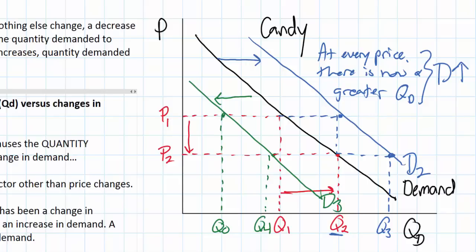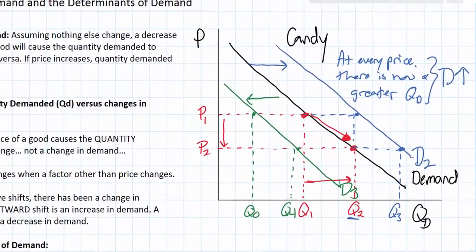That is distinct from a change in quantity demanded, which occurs when the price itself changes. Looking back at our original demand curve — the black curve — we saw that a change in price caused a movement along the same demand curve. However, in the case of D2 and D3, something other than price changed, causing the entire demand curve to shift, and the quantities that consumers demanded at every price to either increase in the case of D2 or decrease in the case of D3.